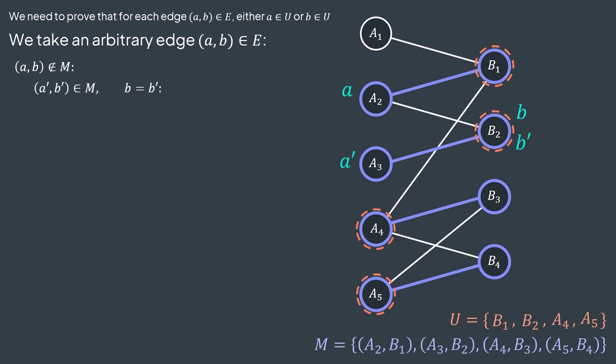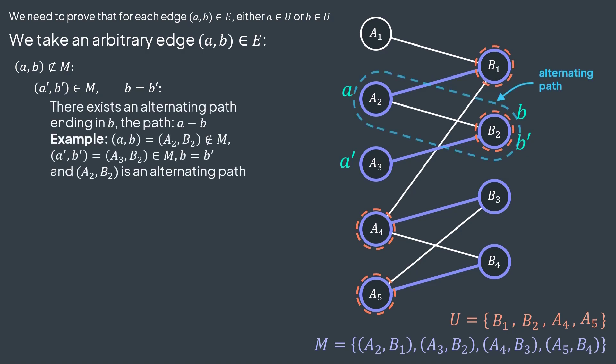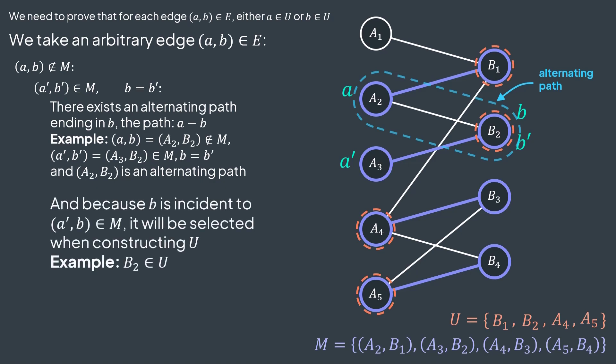Let's start with the case where b' equals b. So we have an edge (a, b) not in matching, and an edge (a', b') in the matching, knowing that b and b' are the same vertex. In this case, we have an alternating path from a to b — it's made of the edge (a, b) only, enough to make an alternating path. Now because there is an alternating path that ends in b, and b is incident to the edge (a', b) that is in the matching, then when building U, b will be selected and added to U. And as you can see, b here, which is b2, can be found in the set U.